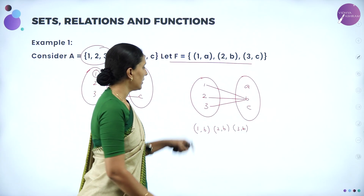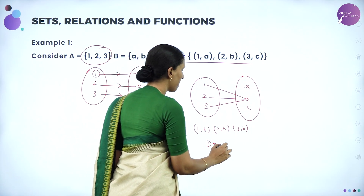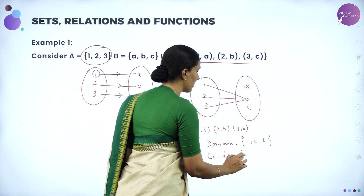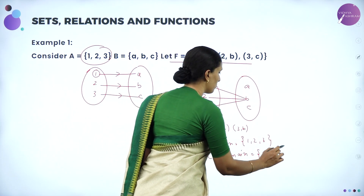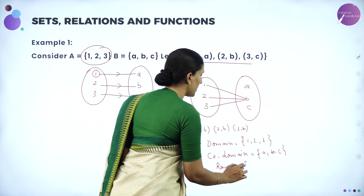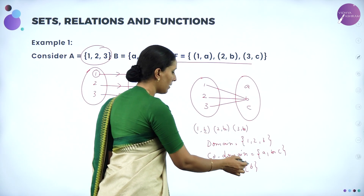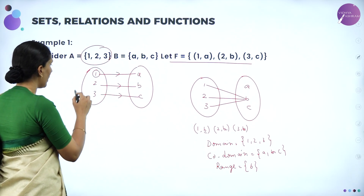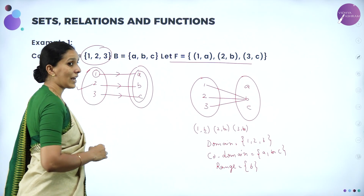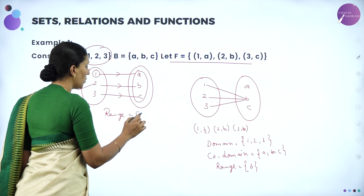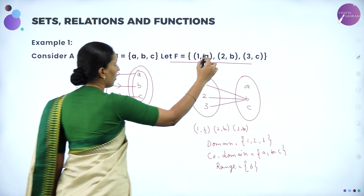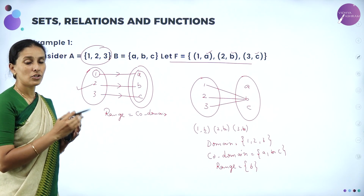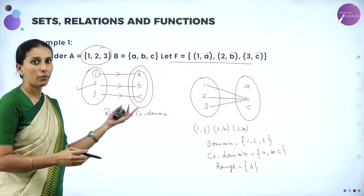Observe this example: domain is {1, 2, 3} and co-domain is {A, B, C}. But the range is only {B}, because in all the ordered pairs the second element is B. So range is a subset of co-domain here. In another example, the second elements are {A, B, C}, which equals both the range and the co-domain. So range is equal to co-domain in that case. Therefore, range is always either a subset of co-domain or equal to co-domain.